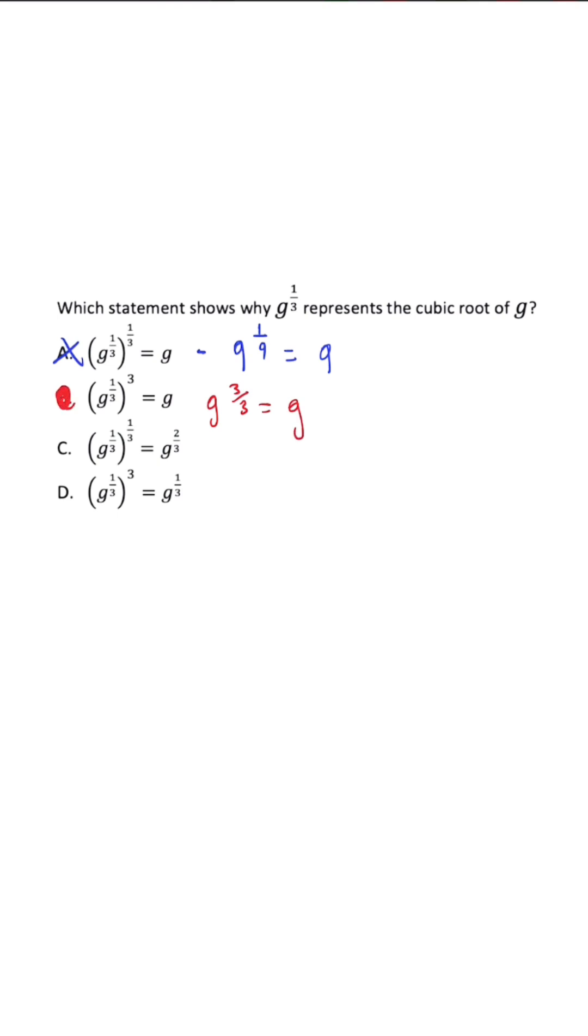But if we keep on going, even with answer choice C, this is the same thing as answer choice A, but they use the exponent rules incorrectly and added instead of multiplying. So that's also incorrect.